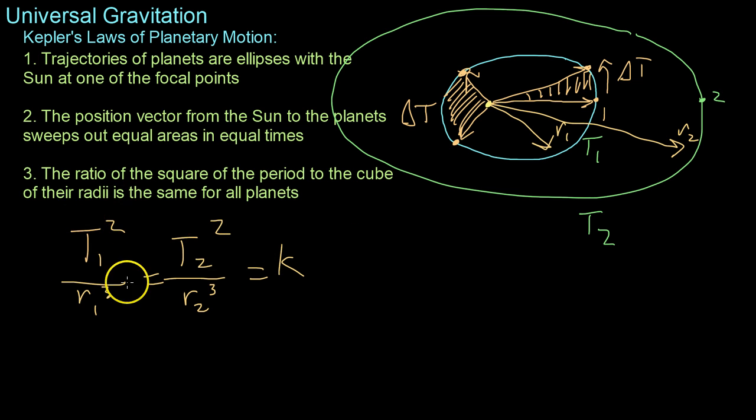So this ratio of the period of rotation of the Earth, you know, 365 and a quarter days over its radius from the Sun, is the same as the period of Mars squared over its radius cubed. And that holds true, you know, for Jupiter, Saturn, etc., all the objects around the Sun.